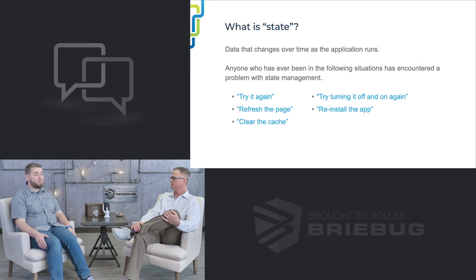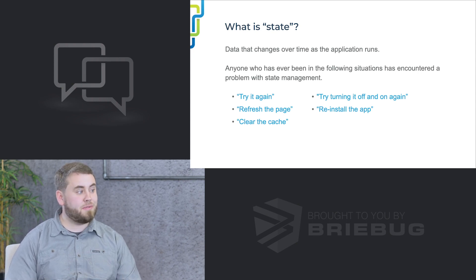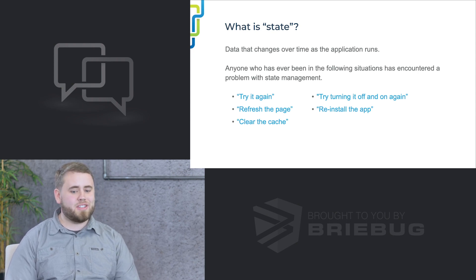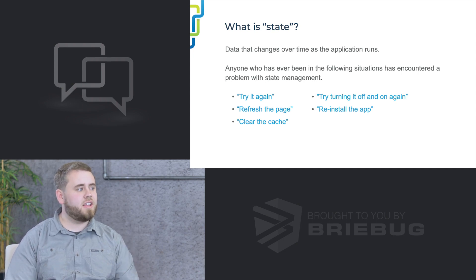Let's break those down one by one. State can be a somewhat nebulous term, but we've all encountered it when using software applications. State is really talking about the data that changes over time as the application runs. We've all encountered problems with state — if you've ever had to use a piece of software and something broke, and someone said 'try it again,' or 'just refresh the page,' or 'clear the cache,' or 'try turning it off and on again' — then you've encountered a state problem, where that software didn't handle state in a consistent way.